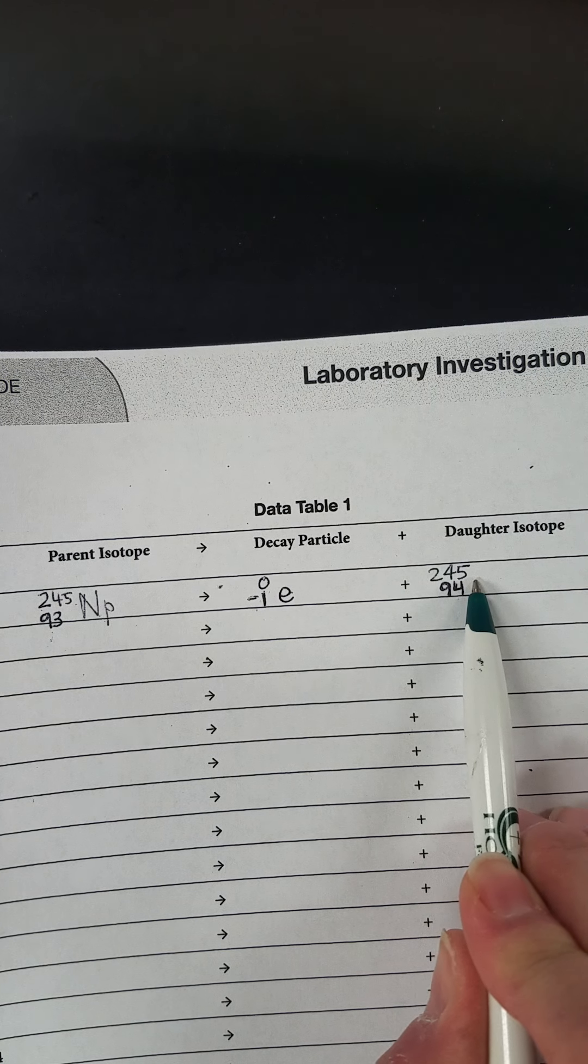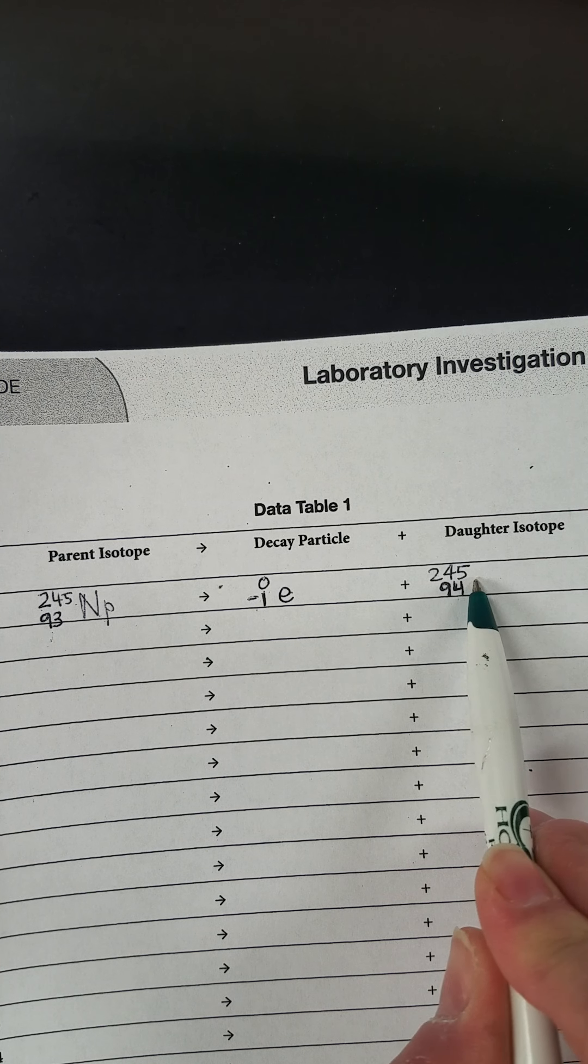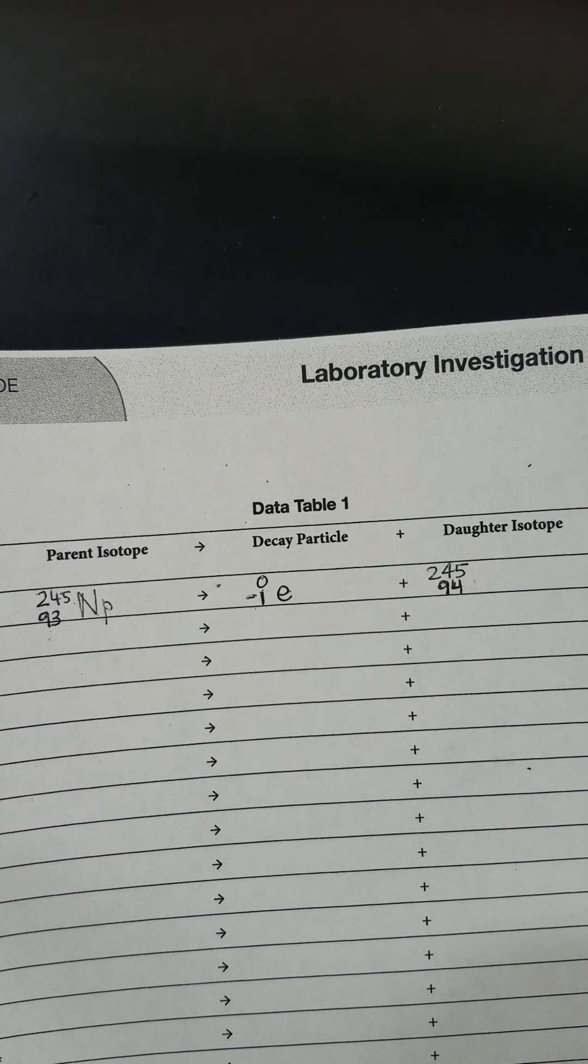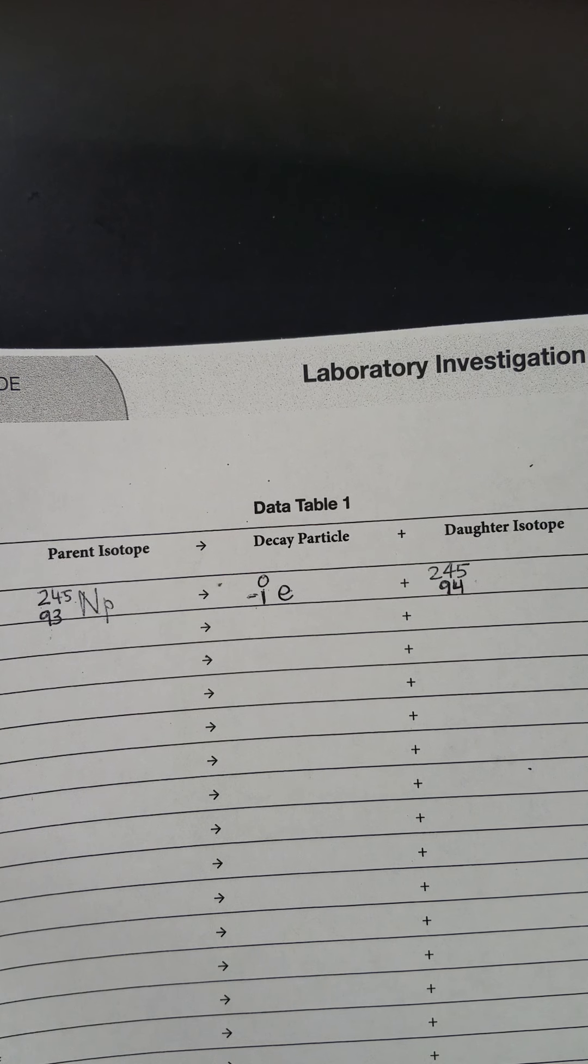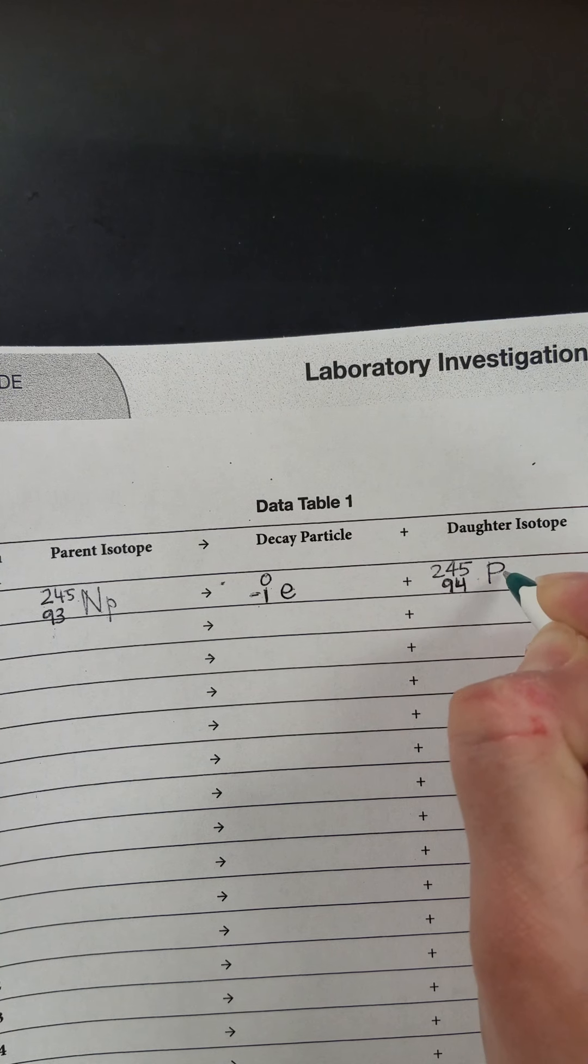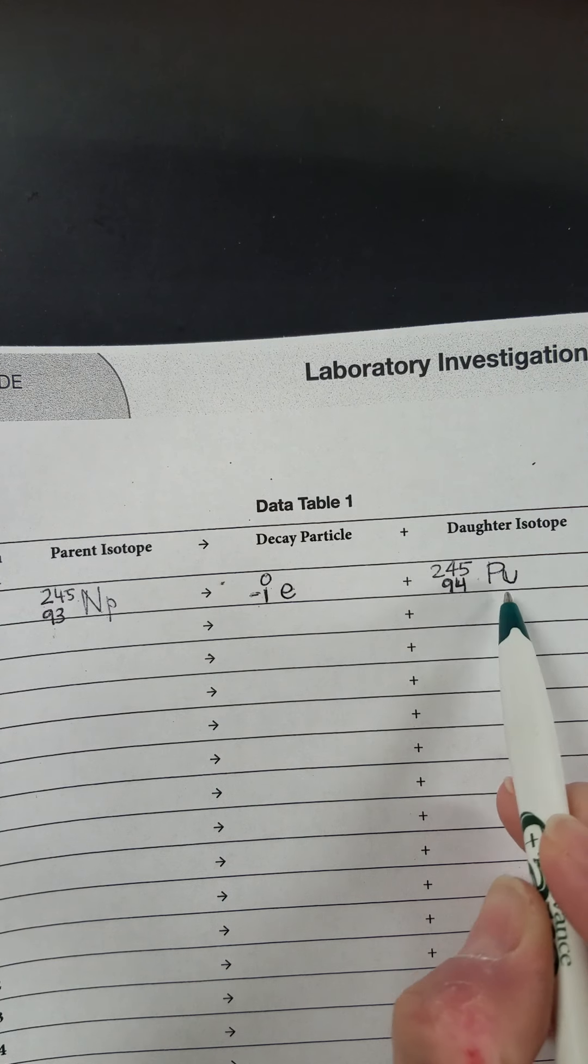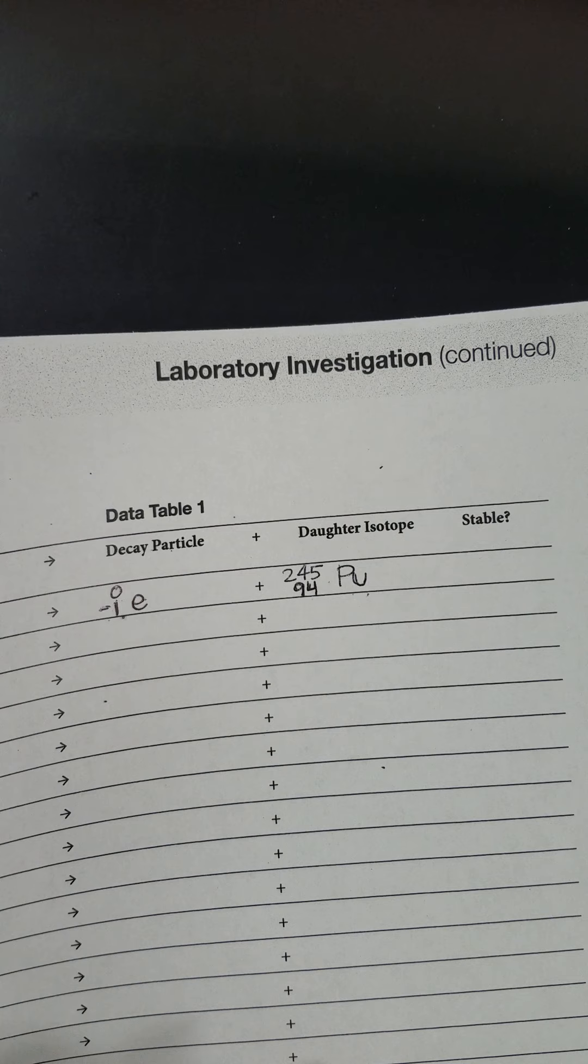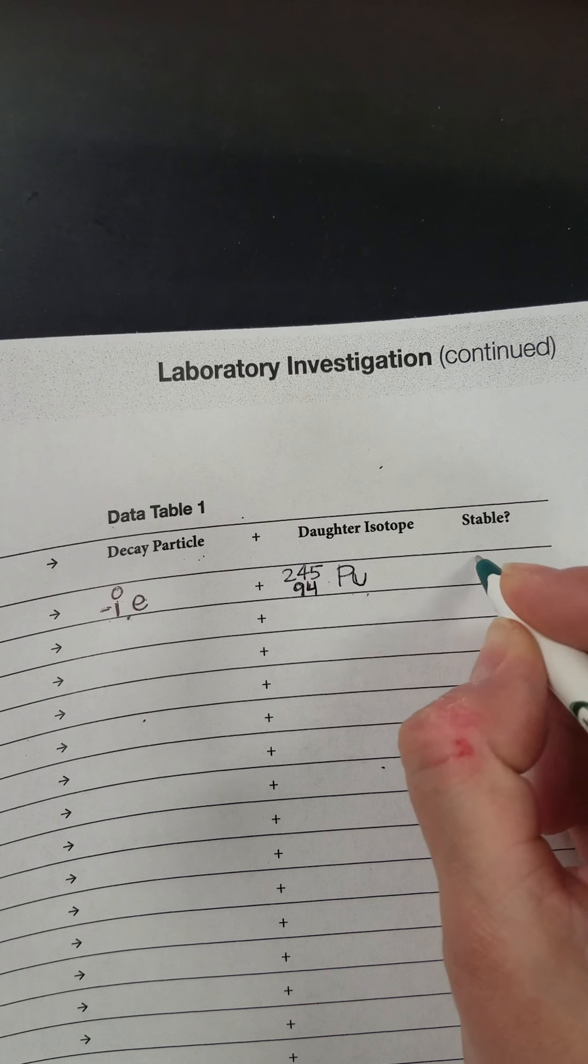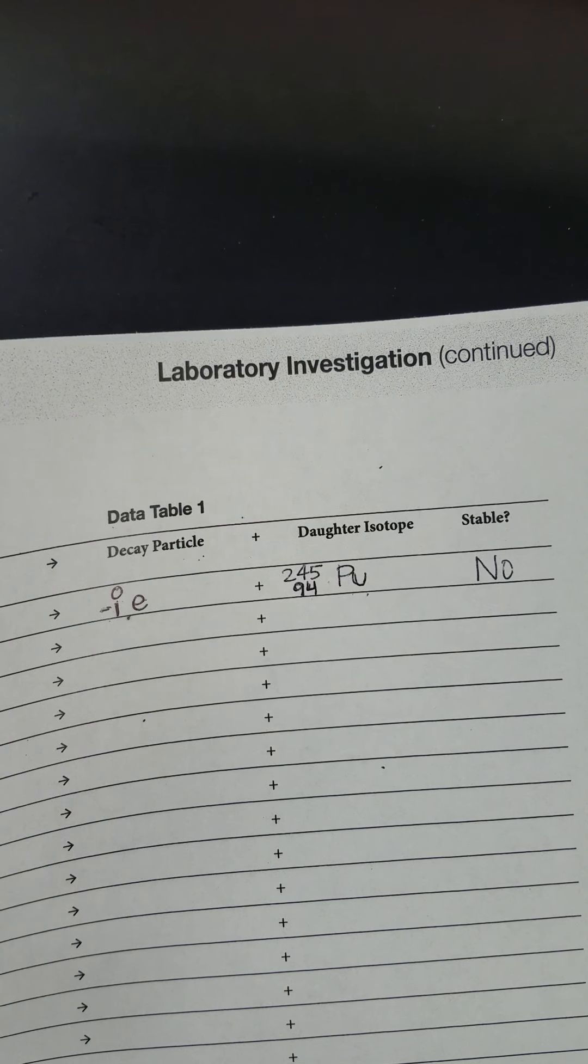Then I'm going to go to the periodic table and I'm going to find element 94 and write that down. And y'all know I'm blind and can't see my periodic table from way back here in the lab. So let me run up there and see what number that is. Element 94 is plutonium. So I'm going to fill that in for my daughter isotope. I know that plutonium is not stable, so I'm going to write no in my stable column.